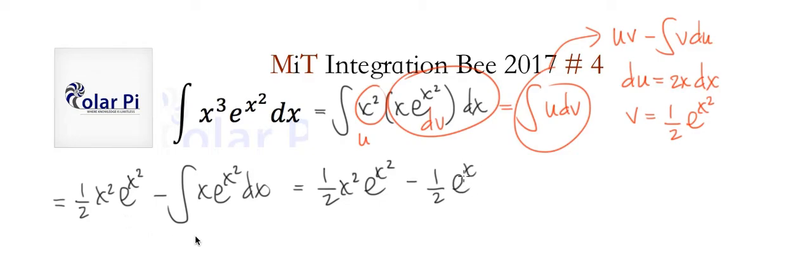so we'll have this and then minus a half e to the x squared. Now, since we have a half e to the x squared both in this part and this part, we can factor it out to